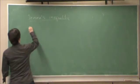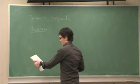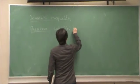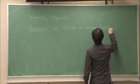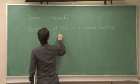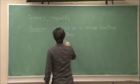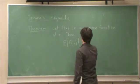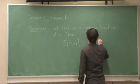Once we know what a convex function is, basically a convex function is one that lies below the connecting line between any two points. Jensen's inequality is this theorem: Let f of x be a convex function of x. Then the expected value of f of x is greater than or equal to f of the expected value of x.